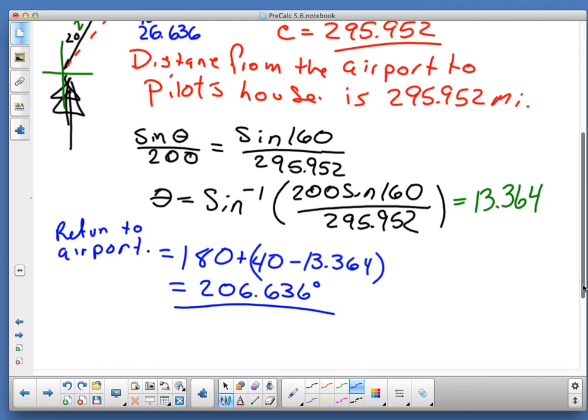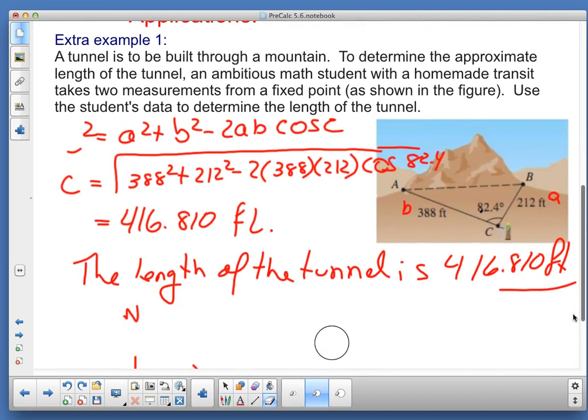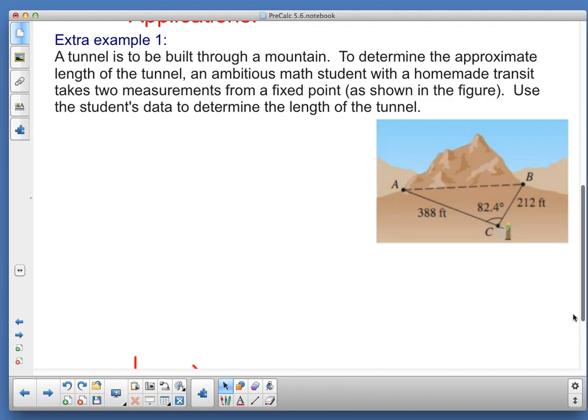Now I look at this—I started on problem two and I skipped out on problem one, so I don't know why I did that, but we'll go back and catch problem one. I'm okay with that. I hope you guys are. In problem one, we've got a tunnel is to be built through a mountain. To determine the approximate length of the tunnel, an ambitious math student with a homemade transit takes two measurements from a fixed point as shown in the figure. Use the student's data to determine the length of the tunnel.